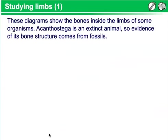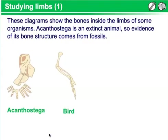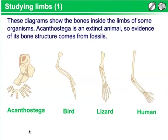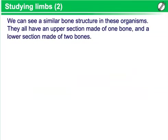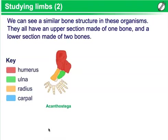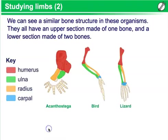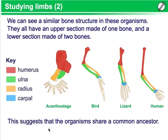Studying Limbs. These diagrams show the bones inside the limbs of some organisms. Acanthostega is an extinct animal, so evidence of its bone structure comes from fossils. Acanthostega is an extinct species thought to be a missing link between fish and tetrapods. They all have an upper section made of one bone and a lower section made of two bones. This suggests that the organisms share a common ancestor.